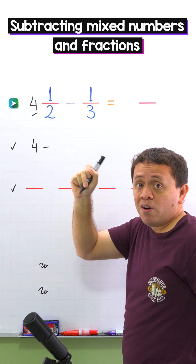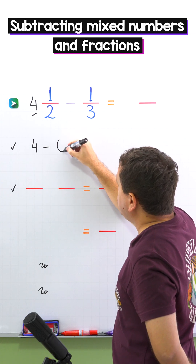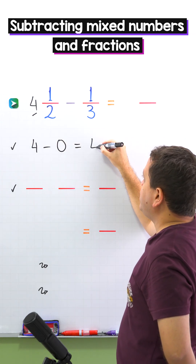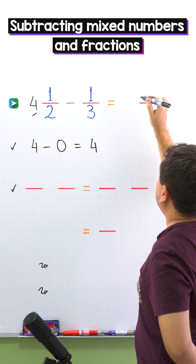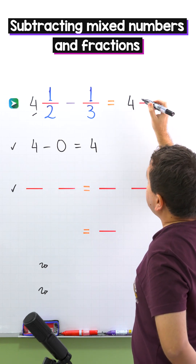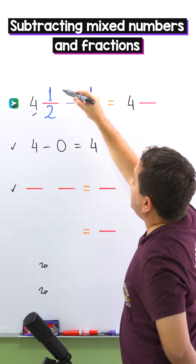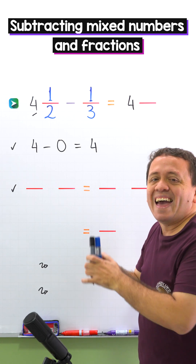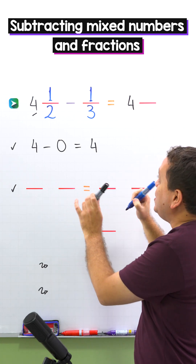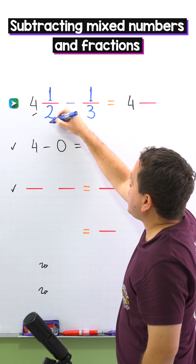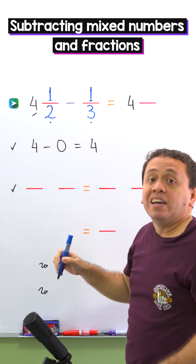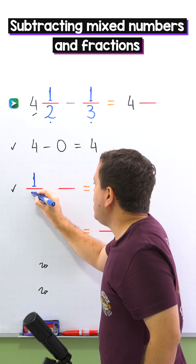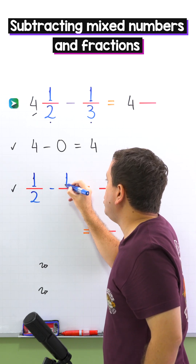Since we don't have whole numbers here, we can put zero, and four minus zero gives us four. We put four in the answer. Now we are going to subtract the fractions. The fractions are one half and one third, and in the same order we put one half minus one third.